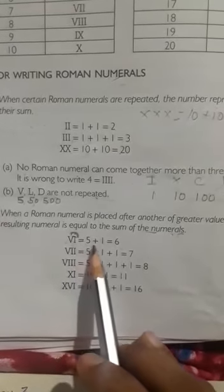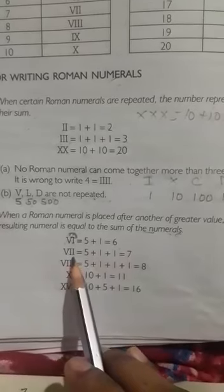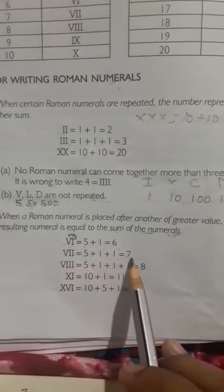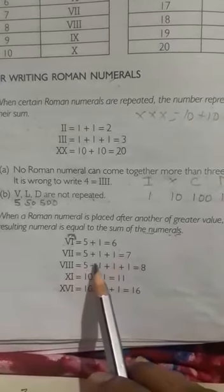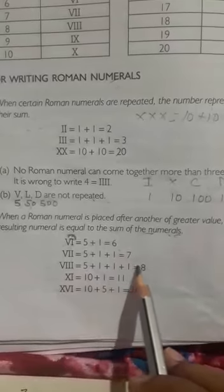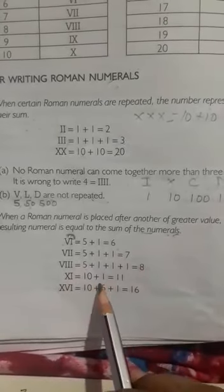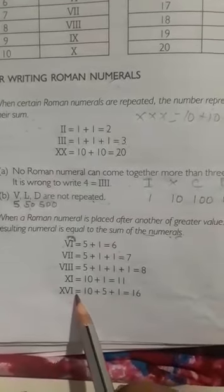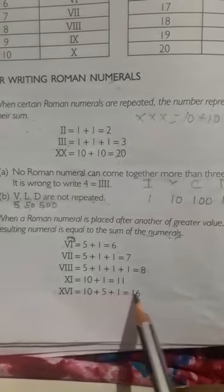VI is equal to 5 plus 1, equals 6. VII is equal to 5 plus 1 plus 1, equals 7. VIII is equal to 5 plus 1 plus 1 plus 1, equals 8. XI is equal to 10 plus 1, equals 11. XVI is equal to 10 plus 5 plus 1, equals 16.